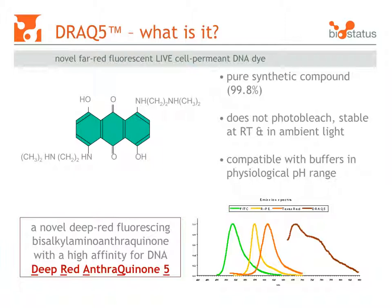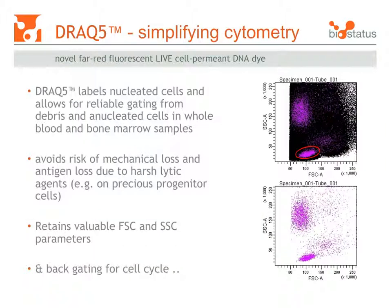Its far red fluorescence permits multicolour analysis and importantly does not interfere with GFP fluorescence. In flow cytometry, DRAC5 can be excited by blue or red excitation light.